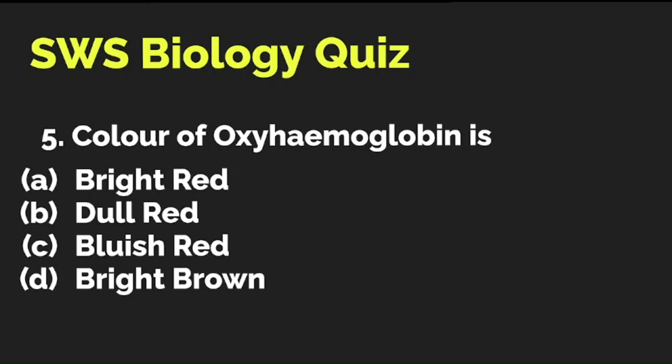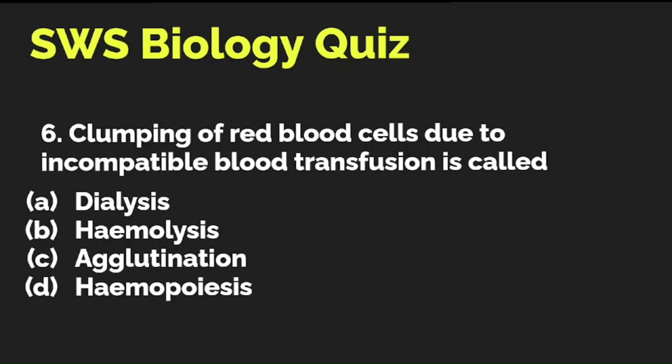The colour of oxyhemoglobin is A) bright red, B) dull red, C) bluish red, or D) bright brown? The correct answer is A — bright red. Clumping of red blood cells due to incompatible blood transfusion is called A) dialysis, B) hemolysis, C) agglutination, or D) hemopoiesis? The correct answer is C — agglutination.